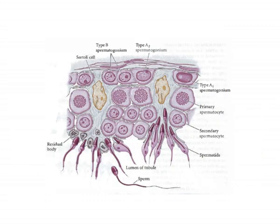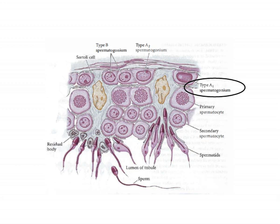The epithelium of seminiferous tubules consists of two types of cells. The first are called Sertoli cells, or nurse or sustentacular cells, that act to nourish and protect the developing sperm cells. The second cell type is the undifferentiated type A spermatogonia, which are stem cells formed from gonocytes. Type A spermatogonia give rise to sperms and their precursors during spermatogenesis.